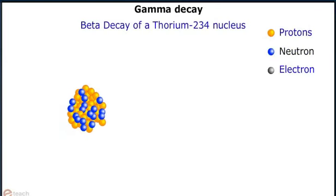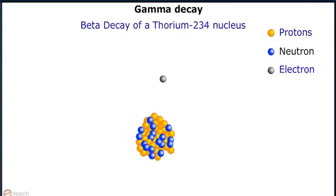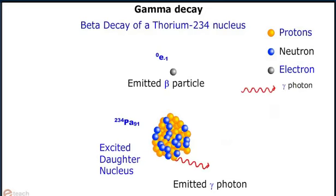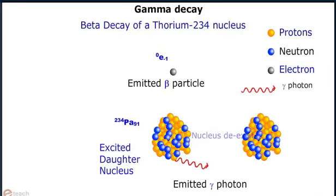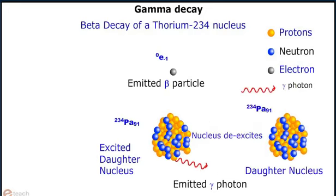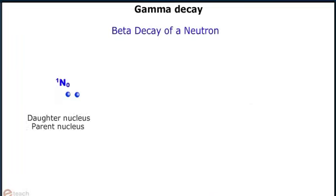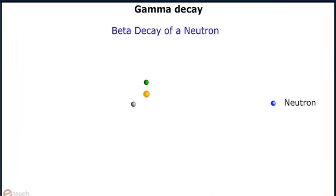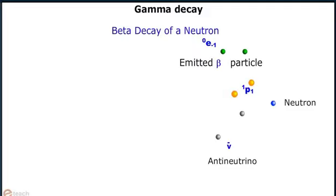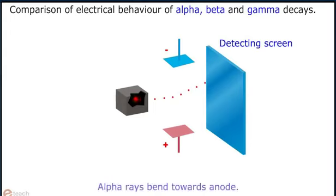In this animation, it is shown how an alpha decay of a uranium-238 nucleus takes place. In the next animation, it is shown how a beta decay of thorium-234 takes place to convert itself into palladium-234 and how gamma decay also occurred. In the final animation, it is shown how the beta decay of a neutron takes place, breaking itself into an electron, a proton, and an anti-neutrino.